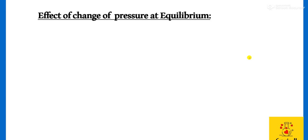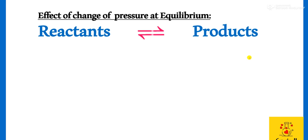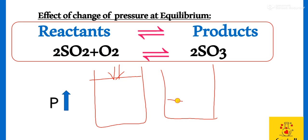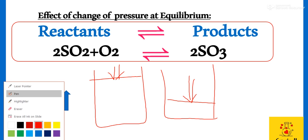Now see the effect of change of pressure at equilibrium. Agar hum ek reversible reaction leetein, jaisa ki hum ne sulfur trioxide ki example lye hai. Agar hum is system ka pressure increase karetein, we know that agar hum kisi bhi closed container ka pressure ko increase kareenge, toh obviously we will have decreased volume. Volume decrease ho jaega.